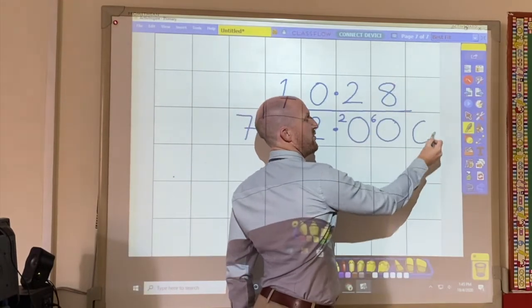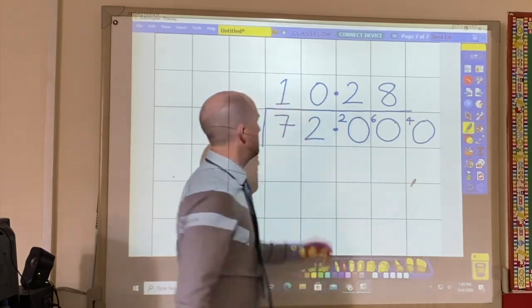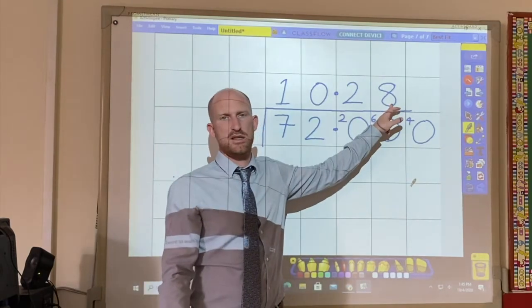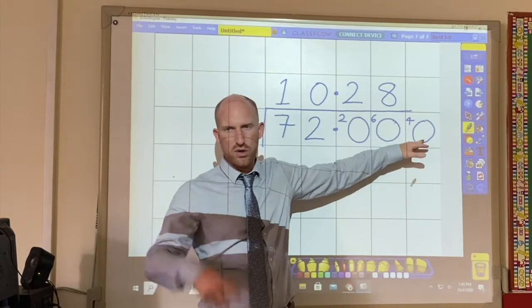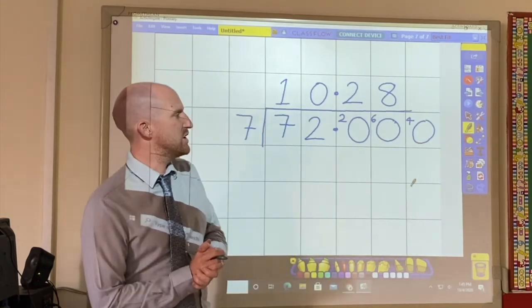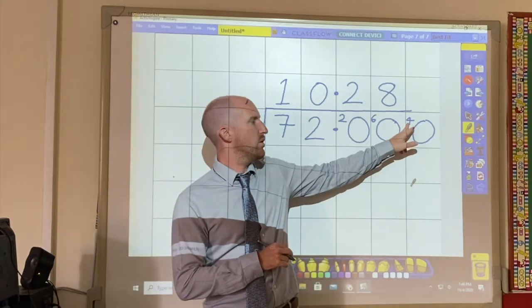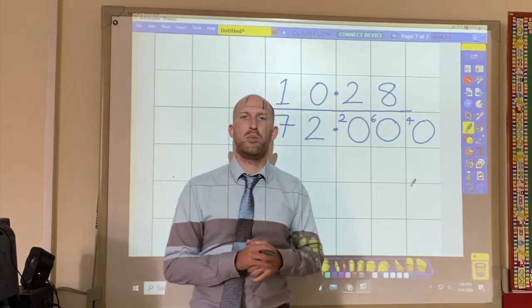And if I really wanted to, I could then continue. Because there are 4 remainder. Because 7 times 8 is 56. And I could keep going and going if I wanted to. But most teachers may just ask you to go to two decimal places. And I'm going to stop here.